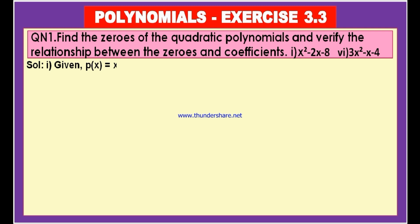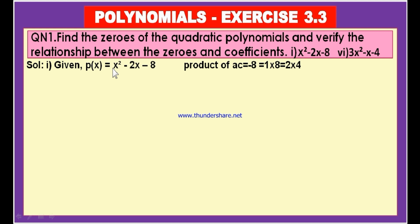The polynomial p of x is equal to x squared minus 2x minus 8. In order to find the zeros, let us factorize this. To factorize a quadratic polynomial, we get the product of the coefficient of x squared and the constant term. Coefficient of x squared is 1 and the constant number is minus 8. So the product of a into c is 1 into minus 8, which equals minus 8.